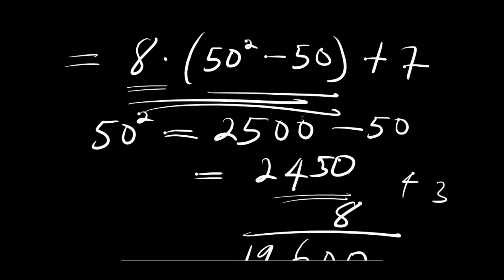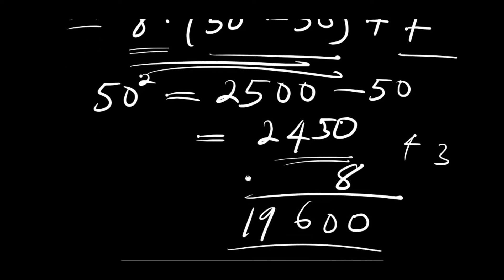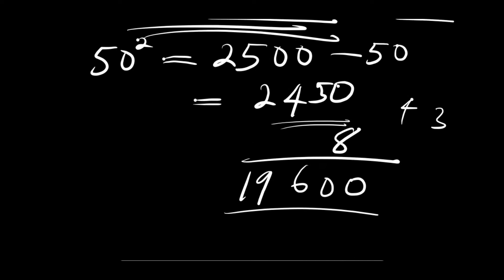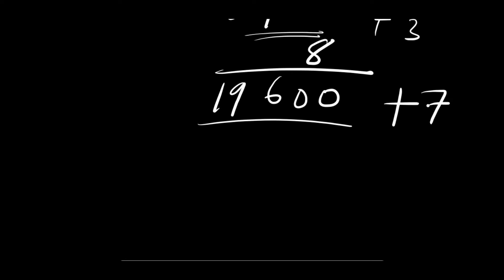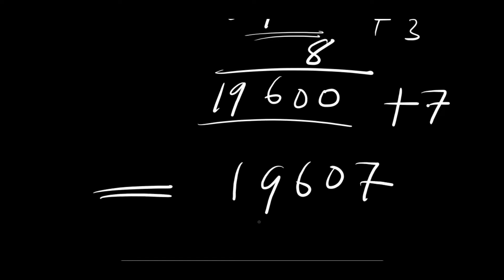That is the result of 8 times (50 squared minus 50). Now we still have plus 7, so we add 7 to the answer. That means our final answer is 19,607. This is the result of our simplification and evaluation — the final answer is 19,607.